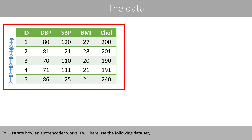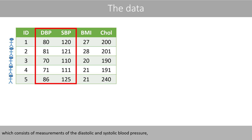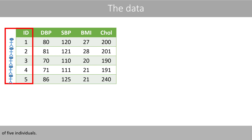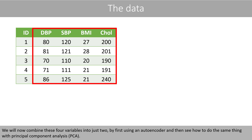To illustrate how an autoencoder works, I will here use the following dataset, which consists of measurements of the diastolic and systolic blood pressure, the body mass index, and the total cholesterol level of five individuals. We will now combine these four variables into just two, by first using an autoencoder and then see how to do the same thing with principal component analysis.